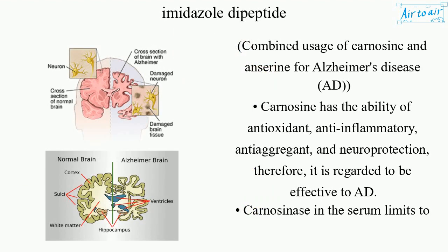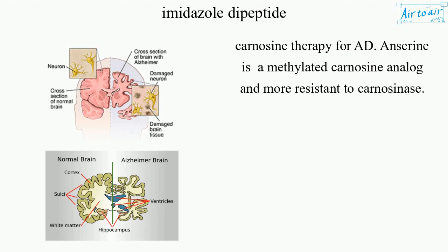Combined usage of carnosine and anserine for Alzheimer's disease. Carnosine has the ability of antioxidant, anti-inflammatory, anti-aggregant, and neuroprotection; therefore, it is regarded to be effective for Alzheimer's disease. Carnosinase in the serum limits carnosine therapy. Anserine is a methylated carnosine analog and more resistant to carnosinase.